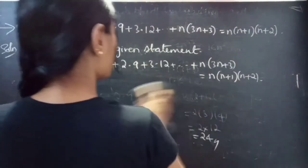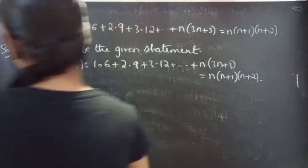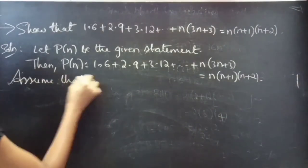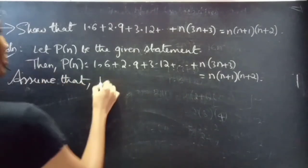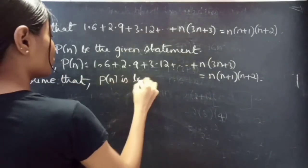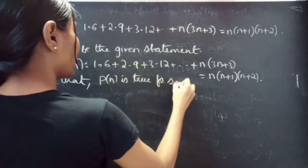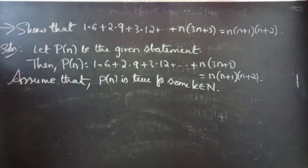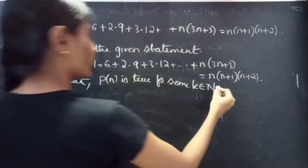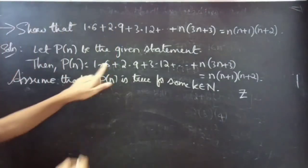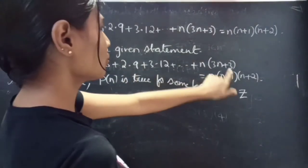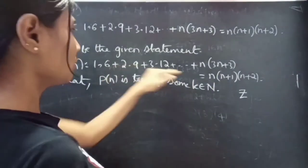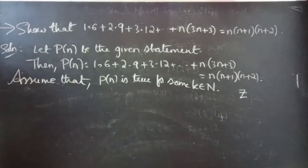You can check for n equals to 3, 4, 5, 6 and so on. Now assume that P(n) is true for some k which belongs to natural numbers. We consider natural numbers instead of integers because here we have all positive numbers — there is no negative sign, so there is no chance of getting a negative number.